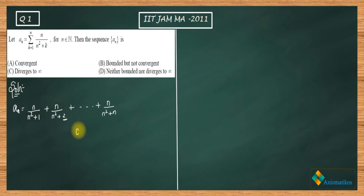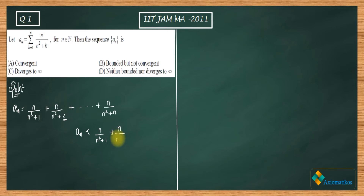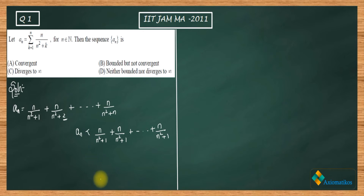So a_n will be less than n/(n²+1) + n/(n²+1) + ... — that is, n terms all equal to n/(n²+1). What I have done is replaced every denominator with n²+1, which gives the upper bound.